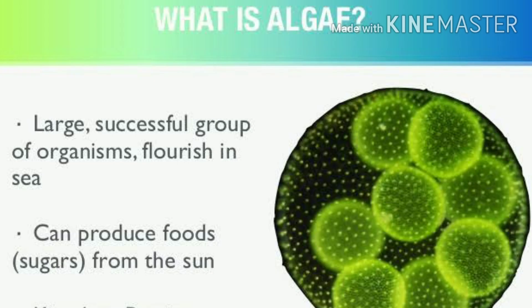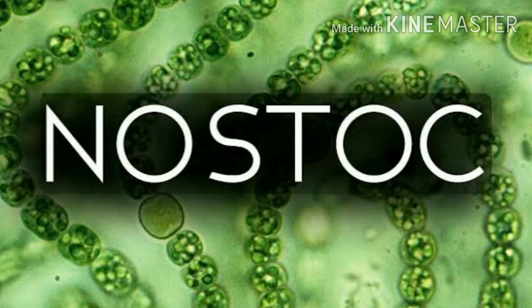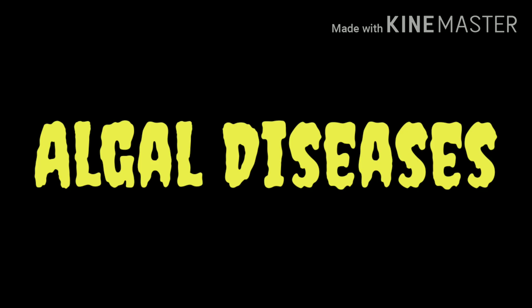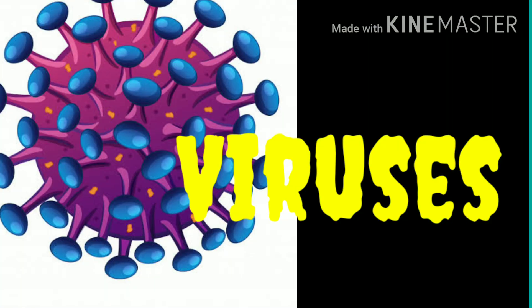Algae are chlorophyllous unicellular or multicellular organisms and they are photosynthetic. Chlamydomonas is a unicellular alga and Nostoc is a filamentous alga. Algal diseases are very few, and one of the famous diseases is shellfish poisoning, caused by dinoflagellates.